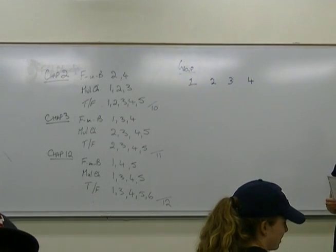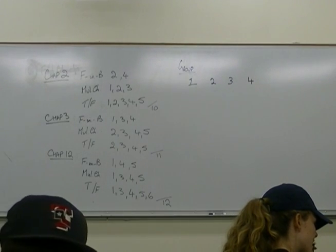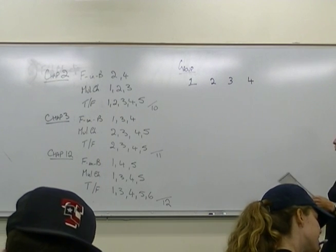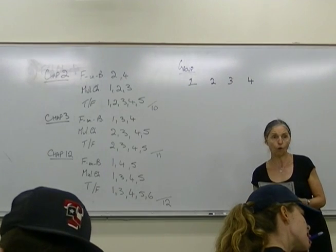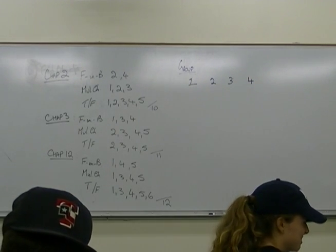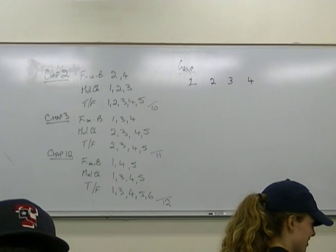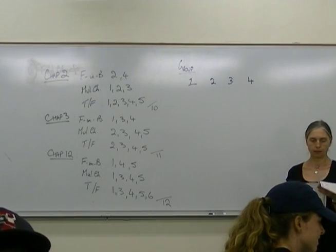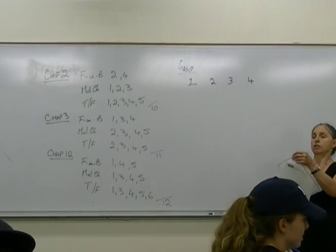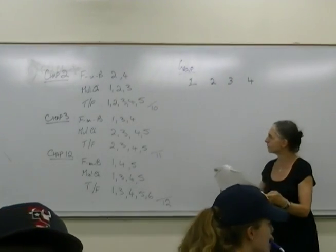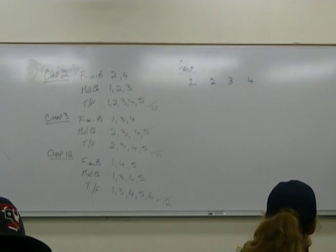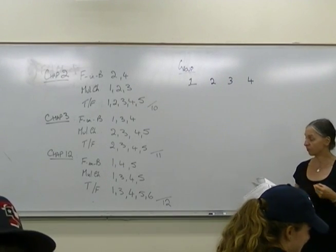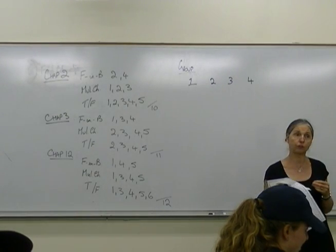Chapter three. Fill in the blank. Number one is oxidative phosphorylation. Number three is mitochondria. Number four is beta oxidation. Multiple choice: Number two is D, number three is E, number four is B, number five is E. True/false: number two is true, number three is false, number four is false, number five is false.